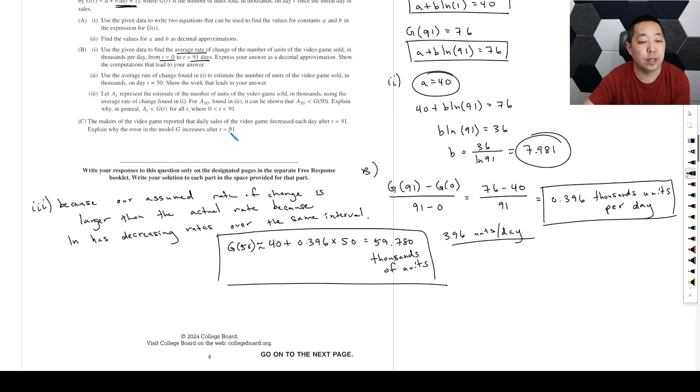Part C, the makers of the video game reported that daily sales of the video game decreased each day after T equals 91. Explain why the error in model G increases after T equals 91. Well, so in this case, G of T is always increasing in value. In other words, because that's what a natural log just always goes up. Just, I'll be very slowly,